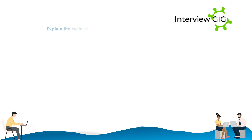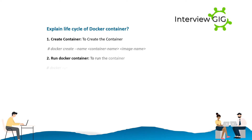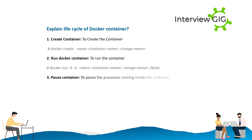Explain the life cycle of a Docker container with command line. Create container — to create the container: docker create --name <container_name> <image_name>. Run Docker container — to run the container: docker run -itd --name <container_name> <image_name> /bin/bash. Pause container — to pause the processes running inside the container: docker pause <container_id/name>.